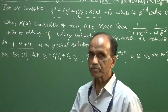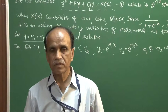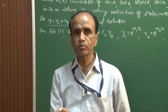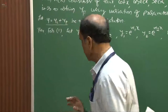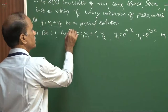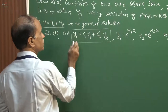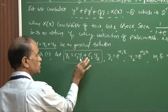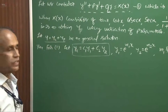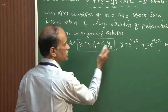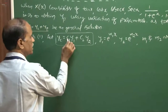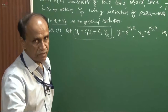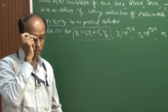In variation of parameters, even third order is possible, but for second order we introduce two parameters. Those two parameters are calculated in the form of integrals. This complementary function step is the most important part — method of variation of parameters depends completely on this solution. If this is correct, then all other steps are correct; if this is wrong, the entire solution becomes wrong. So y₁ is one solution and y₂ is another, and we take c₁ and c₂ not as constants but as varying parameters.